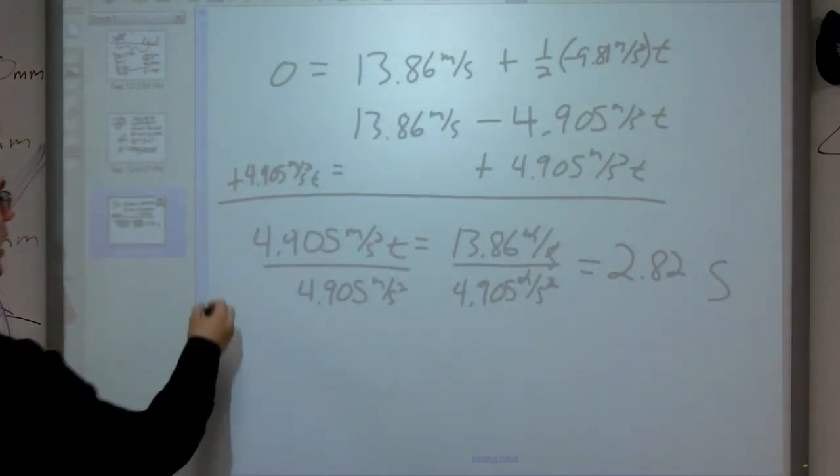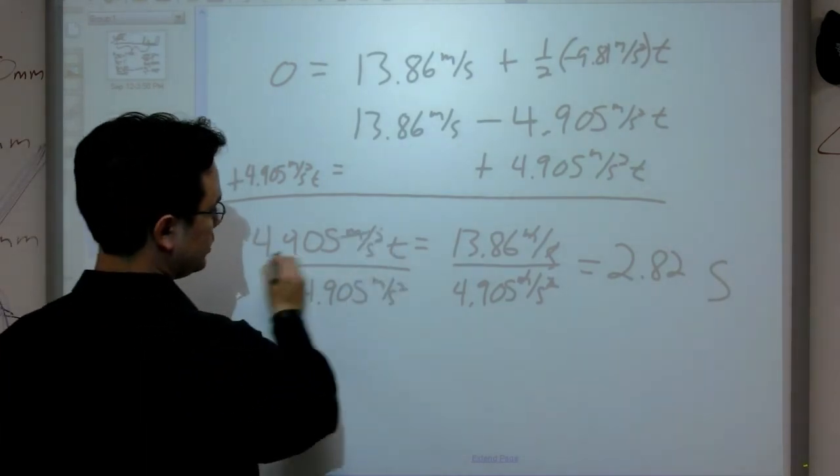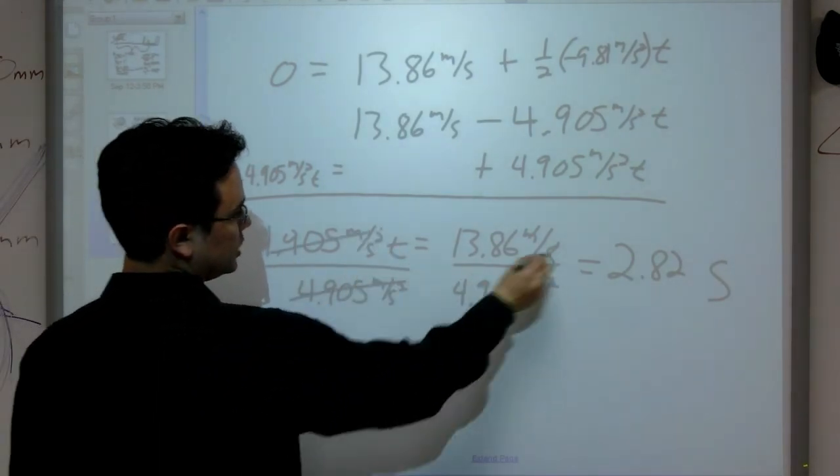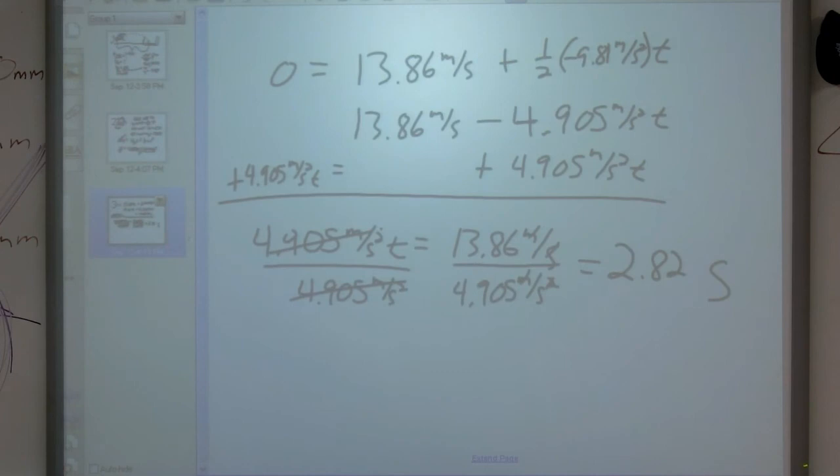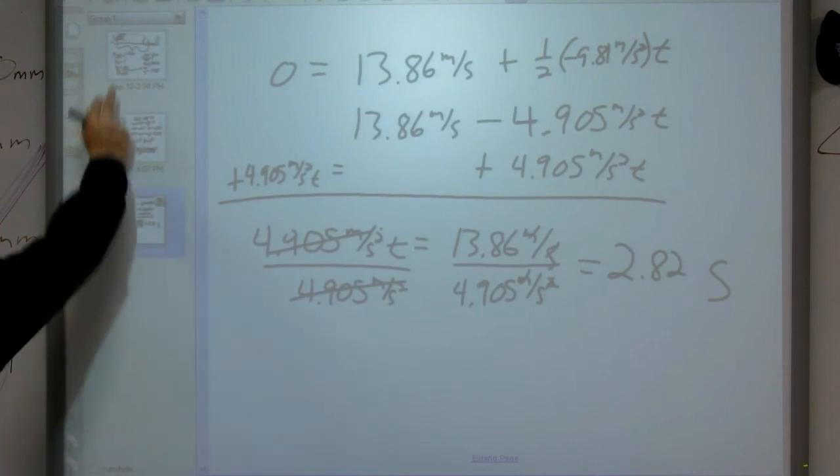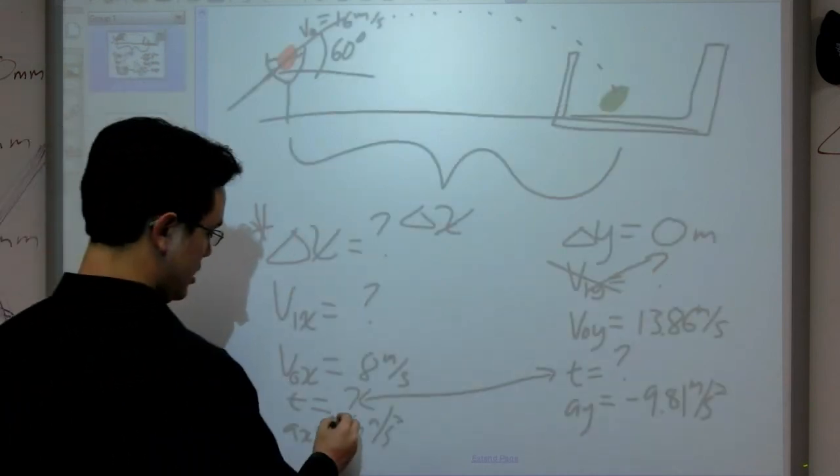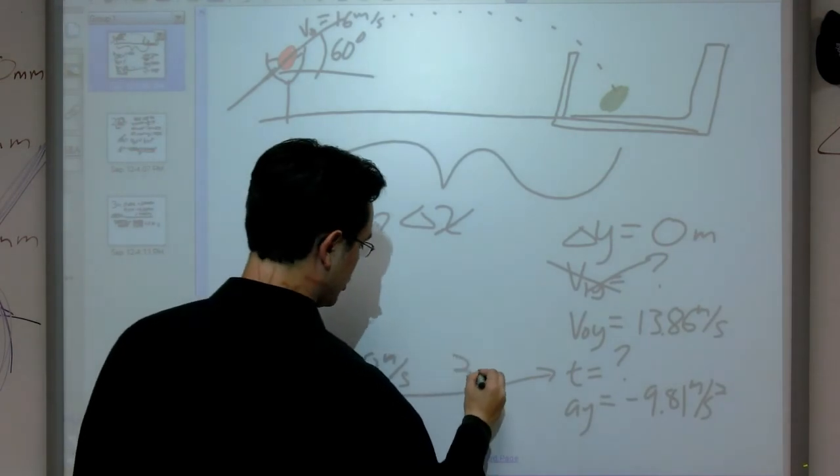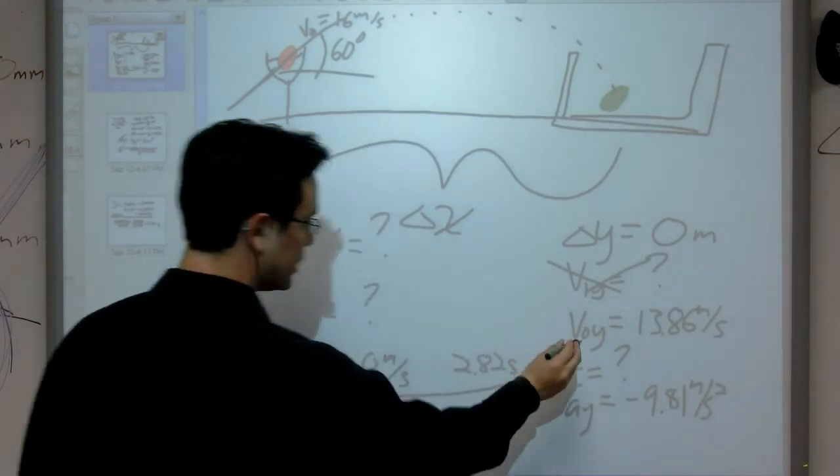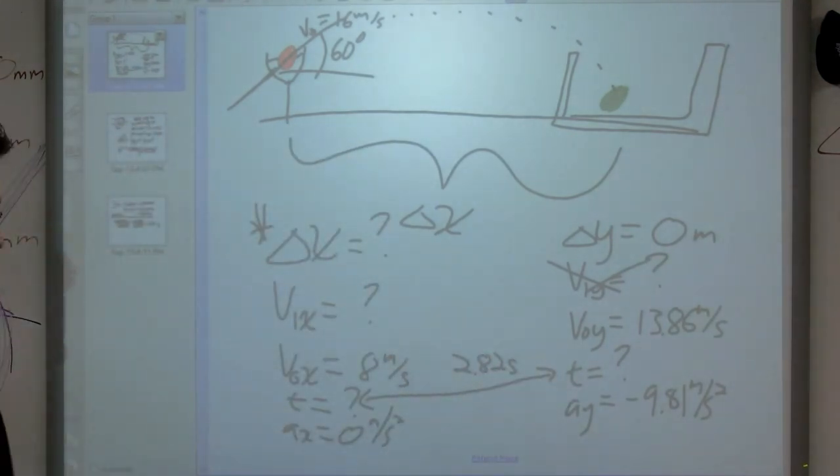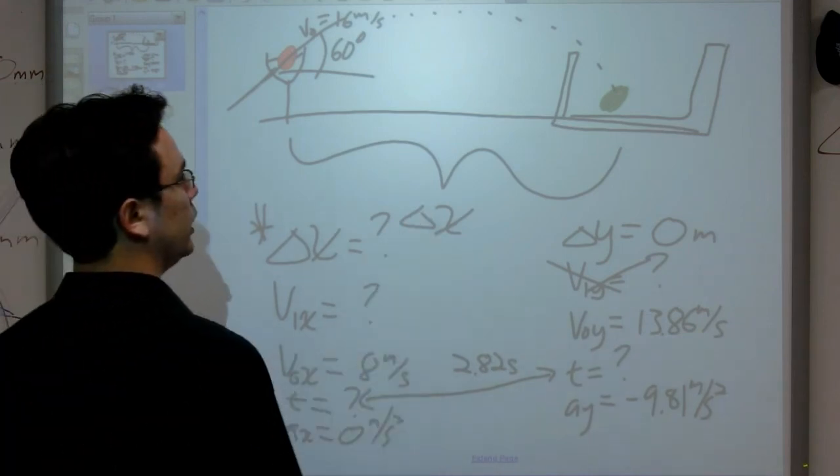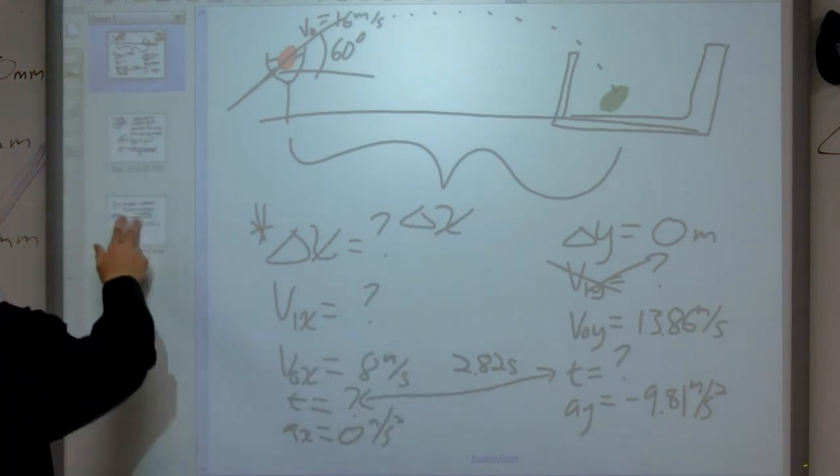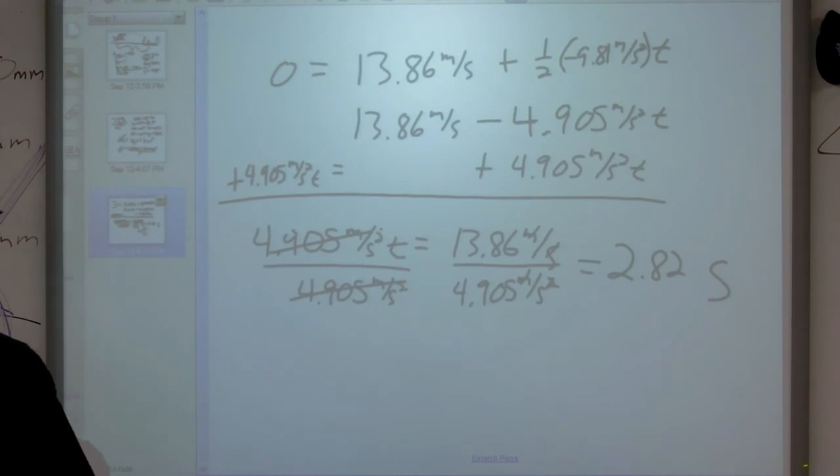Now I have my time. Going back up here, I know that my T is equal to 2.82 seconds in both the Y and the X because that's when the wrathful bird ends up hitting the pork palace. I'm in my home stretch.